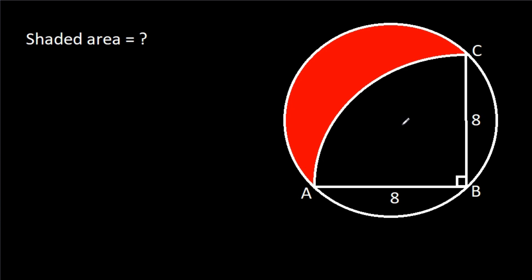In this video, we have been given a quarter circle inside a circle, and AB is 8, BC is 8. Then we have to find the shaded area.